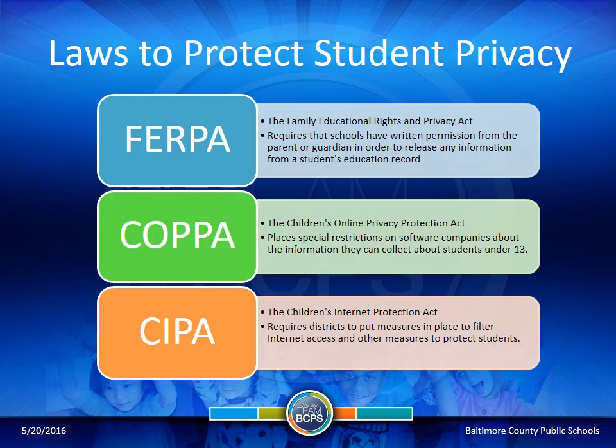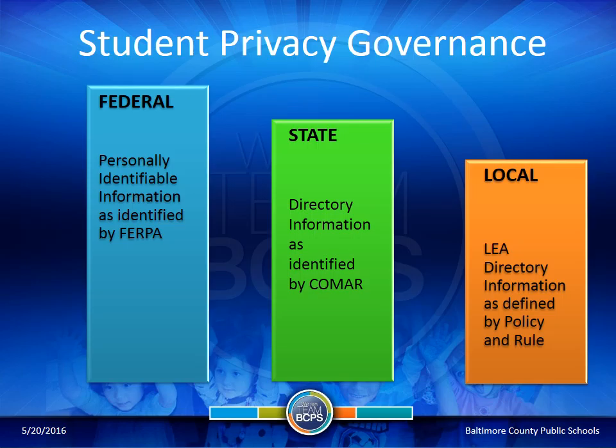The first law that protects student privacy is the Family Educational Rights and Privacy Act (FERPA), which requires schools to have written permission from a parent or guardian to release any information from the student's education record. The Children's Online Privacy Act (COPPA) places special restrictions on software companies about information they can collect on students under 13. The Children's Internet Protection Act (CIPA) requires districts to put measures in place to filter internet access and protect students, which we see daily when students are blocked from certain things that teachers can use.